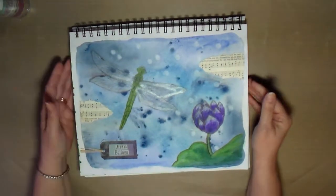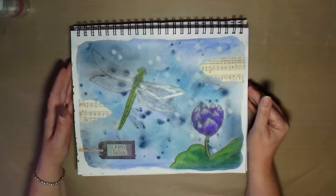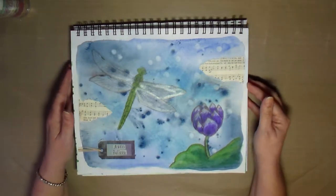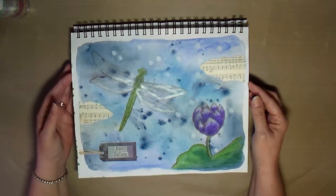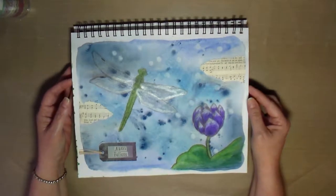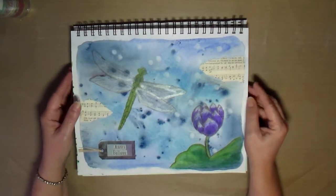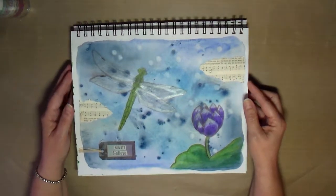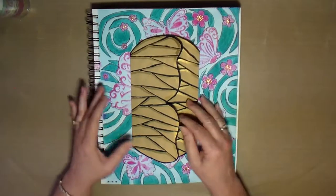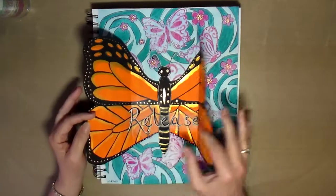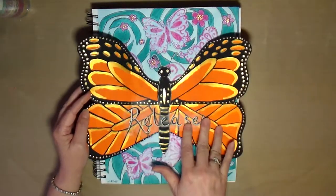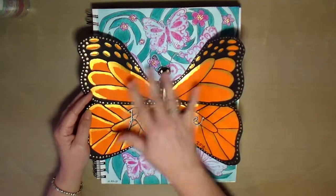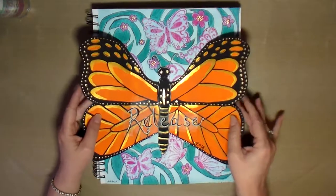Some of them is from taking a class, and this was from a class on Craftsy that the Frugal Crafter had, and I created three beautiful art journal pages from the class. Some of them is just ideas that come to me where I just think about what I want to do, and this is a page I did for my Word of the Year release.